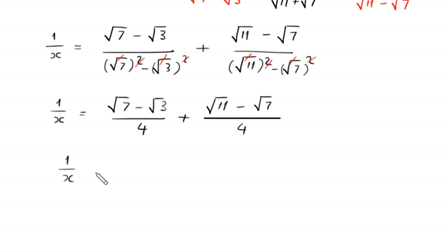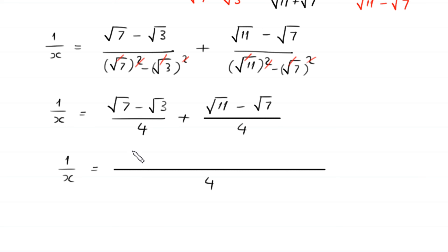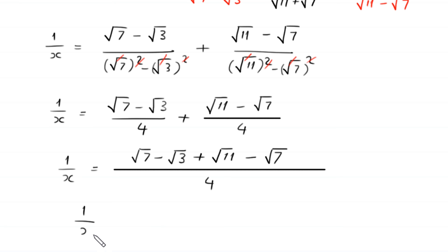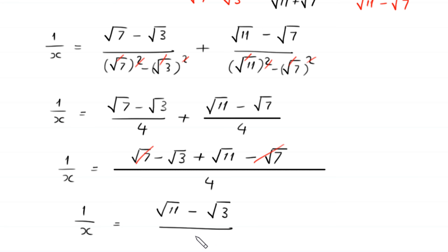So 1 over x equals, with common denominator 4: square root of 7 minus square root of 3 plus square root of 11 minus square root of 7, all over 4. The positive square root of 7 and negative square root of 7 cancel, leaving 1 over x equals square root of 11 minus square root of 3, divided by 4.